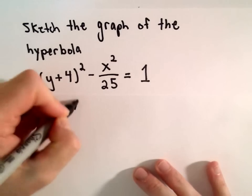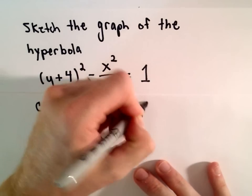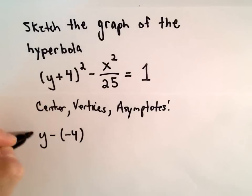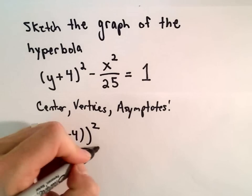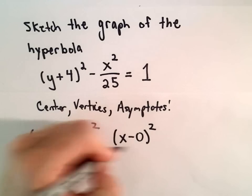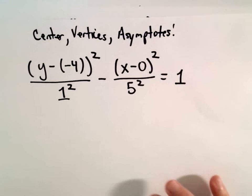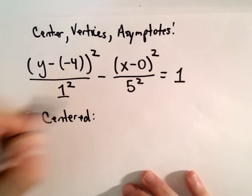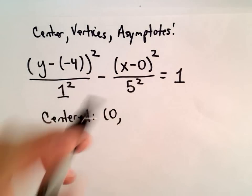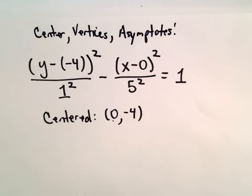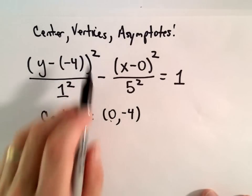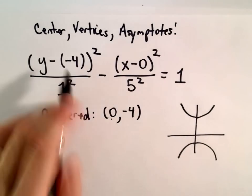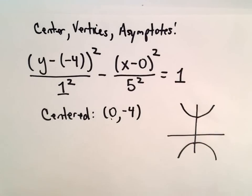So we'll find the center, vertices, and the asymptotes. I'm going to rewrite this in standard form. We can write this as (y - (-4))² over 1² minus (x - 0)² over 5² equals 1. Our hyperbola is going to be centered at x=0, y=-4 — those are our h and k values. Based on the fact that it's of the form y² - x², it's going to open upwards and downwards. This is going to be shifted and moved around, but it's got this basic shape to it.